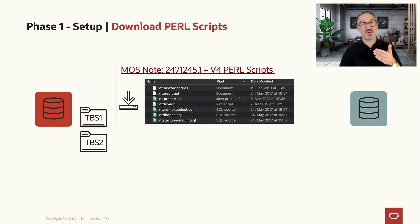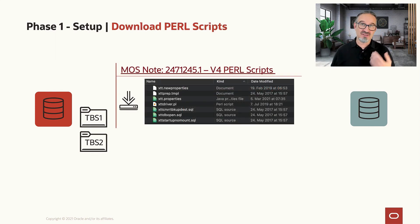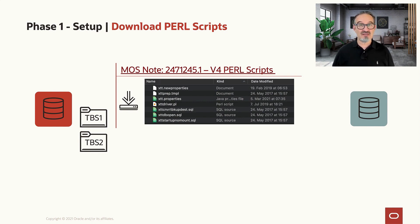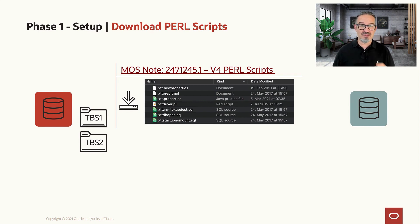What we need is the V4 — that's version four Perl scripts for transportable table spaces — from the My Oracle Support node. It's a zip file at the end of the node. You download that zip file, unzip it, and you will find those seven files on disk.